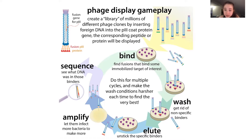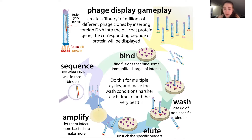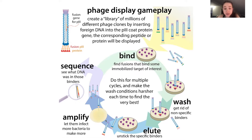You can wash off those nonspecific binders, such as by increasing the salt concentration. After you wash it, you're going to be left with ones that stick — they're at least moderate stickers that survived the wash. Then you want to elute: you want to unstick these specific binders, which you can do using slightly harsher conditions such as changing the pH. Now you take those phages that you have just eluted — these should be the specific binders.